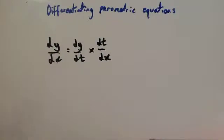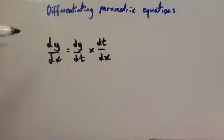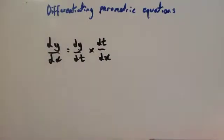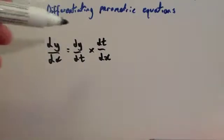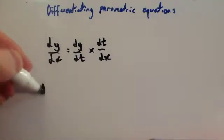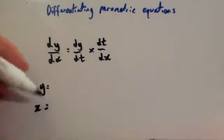In this video we're going to look at differentiating parametric equations — that's whenever you've got x and y in terms of some parameter t. To do that you're going to have to know the chain rule. The chain rule is dy/dx equals dy/dt times dt/dx. This is really useful here because you're going to have y equals and x equals.